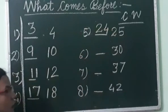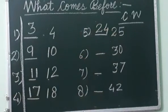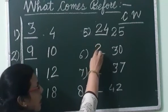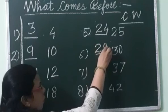Now 30. So start counting from 21: 21, 22, 23, 24, 25, 26, 27, 28, 29, 30. So what comes before 29 and 30? 29.